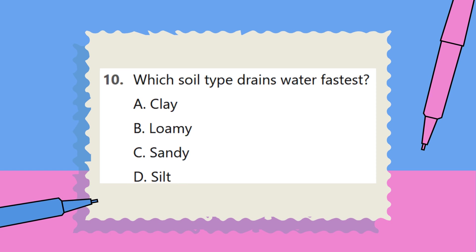Question 10. Which soil type drains water fastest? A. Clay. B. Loamy. C. Sandy. D. Silt.